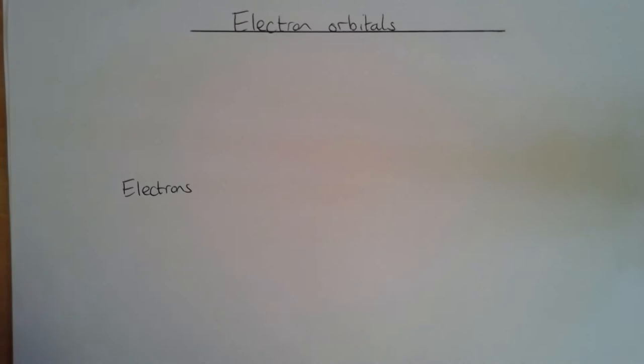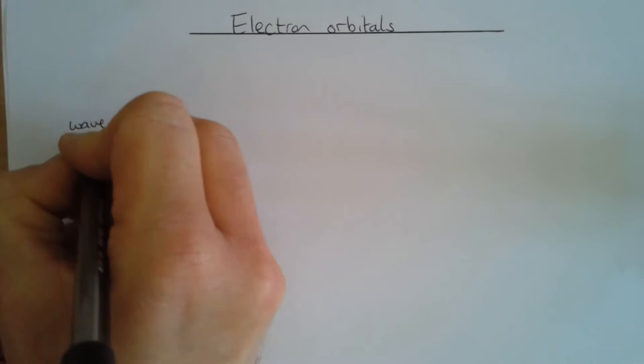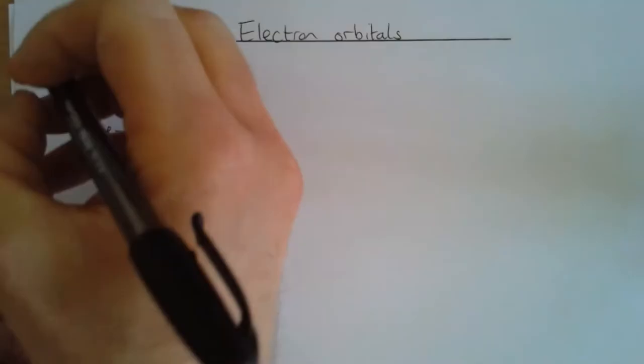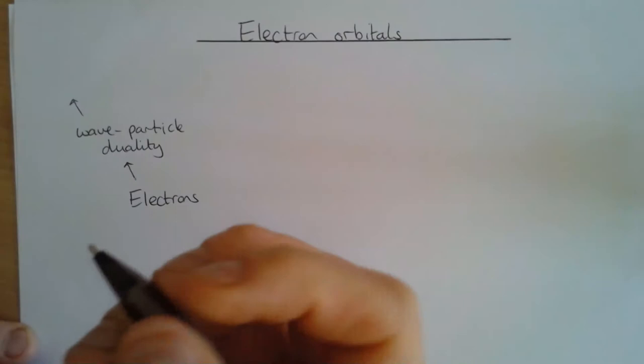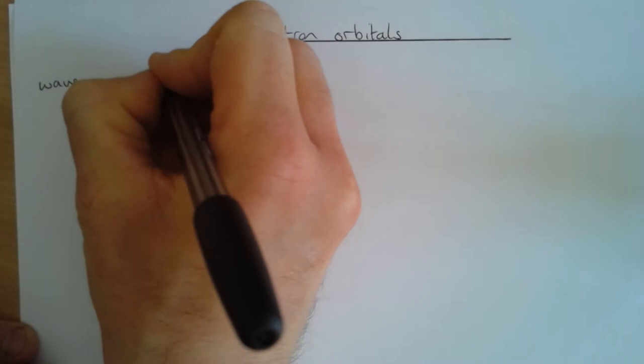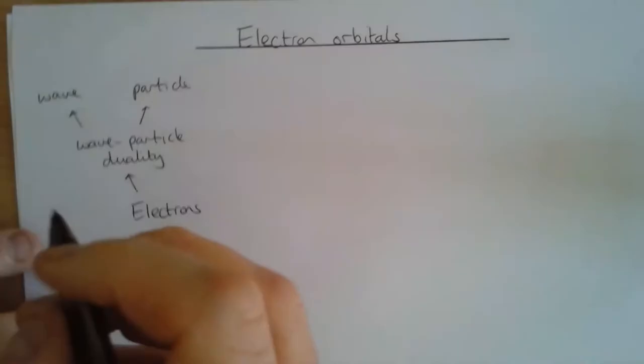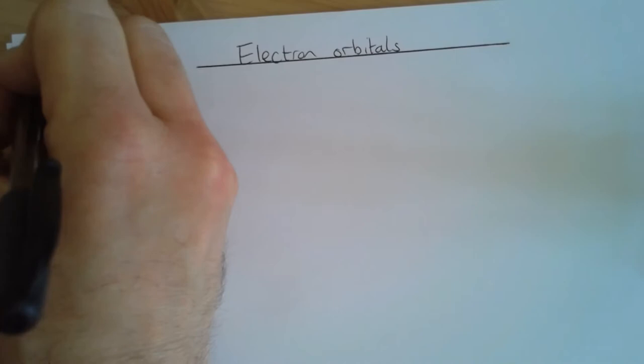The first thing we need to be aware of when talking about electrons is what's called wave-particle duality. Wave-particle duality means that an electron can behave both as a wave and also as a particle — it can exhibit properties of both waves and particles.